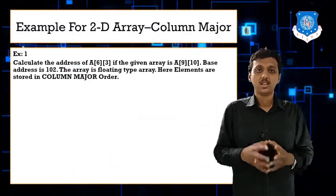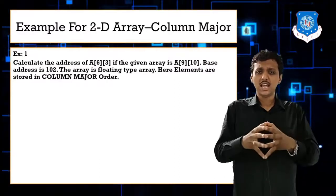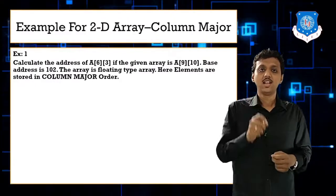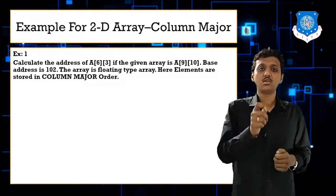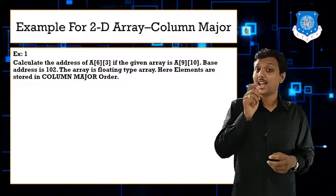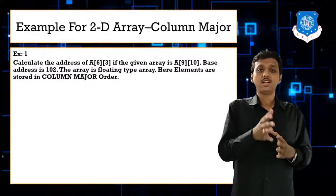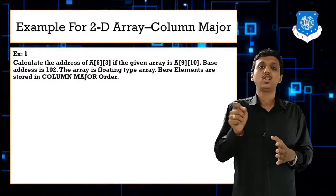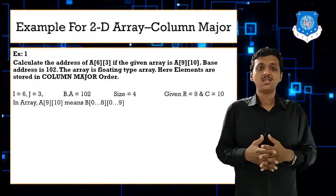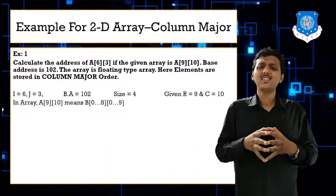Example for 2D array column major: calculate the address of A[6][3]. The given array is A[9][10], so total rows R = 9 and total columns C = 10. We need the address of element at i = 6, j = 3. The array is floating type, so size = 4. Base address = 102. Array A[9][10] means index ranges are 0 to 8 for rows and 0 to 9 for columns.